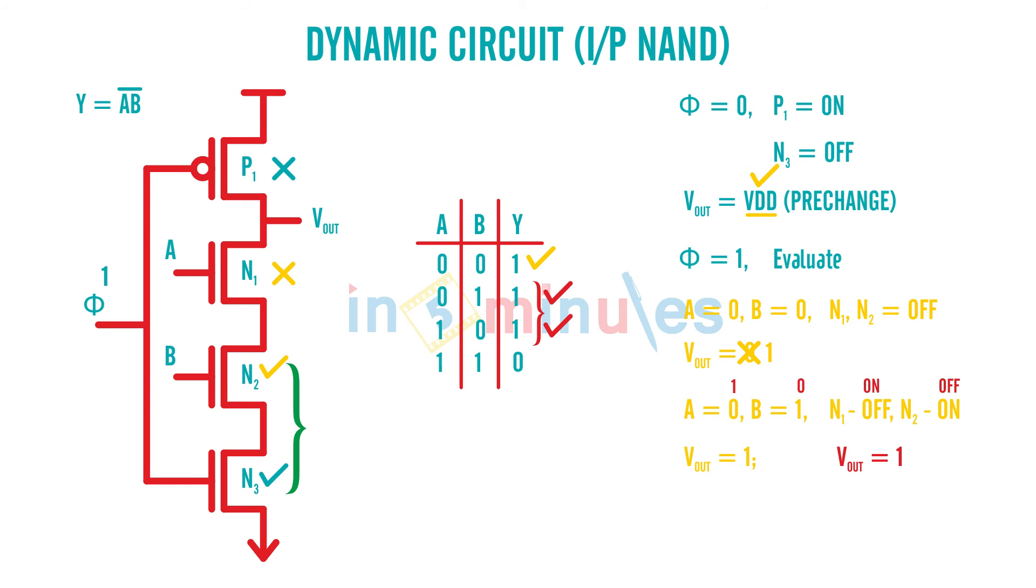The fourth case is nothing but A being 1 and B being 1. If A is 1 and B is 1, both N1 and N2 would be on and my output will have a path to go to ground because N3 is also on. In the evaluate phase we know that N3 is on so the output gets a path to discharge to ground and VO is equal to 0 so I get this condition as well.